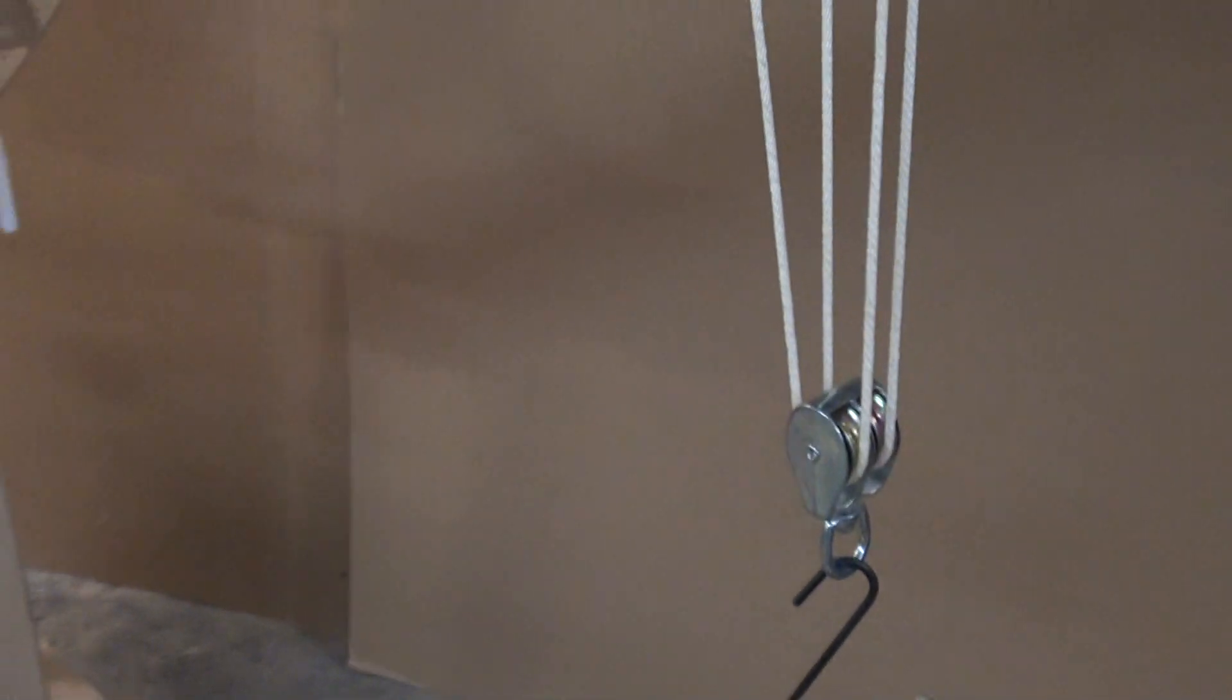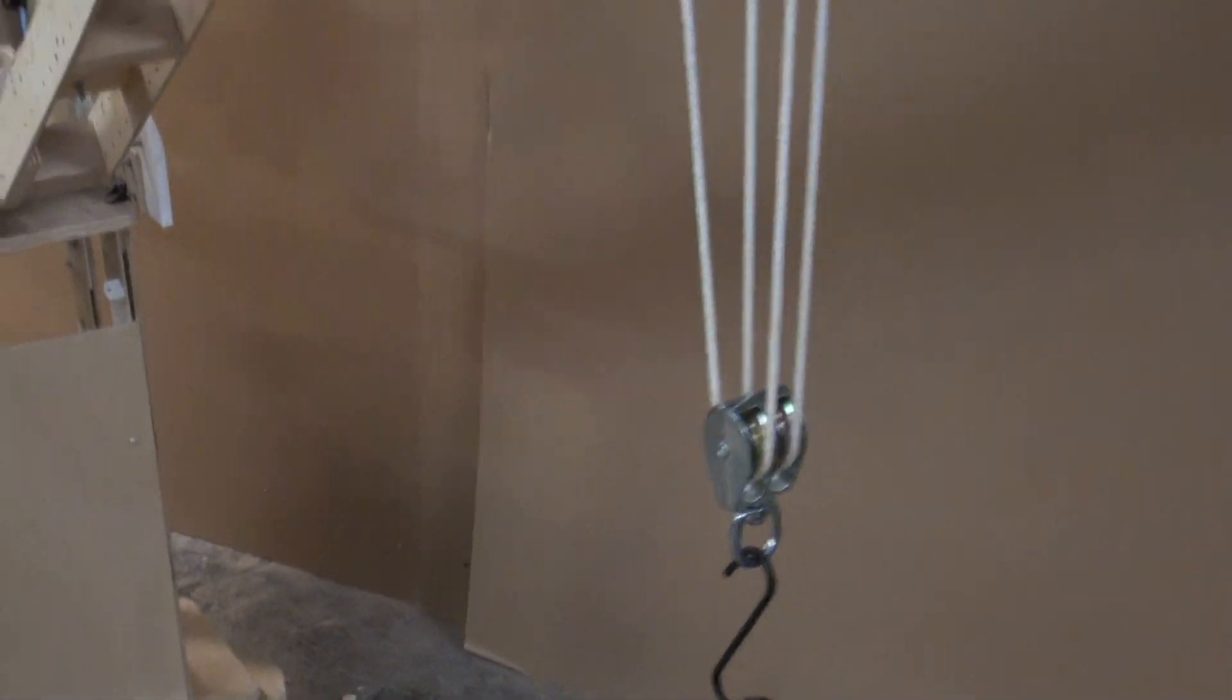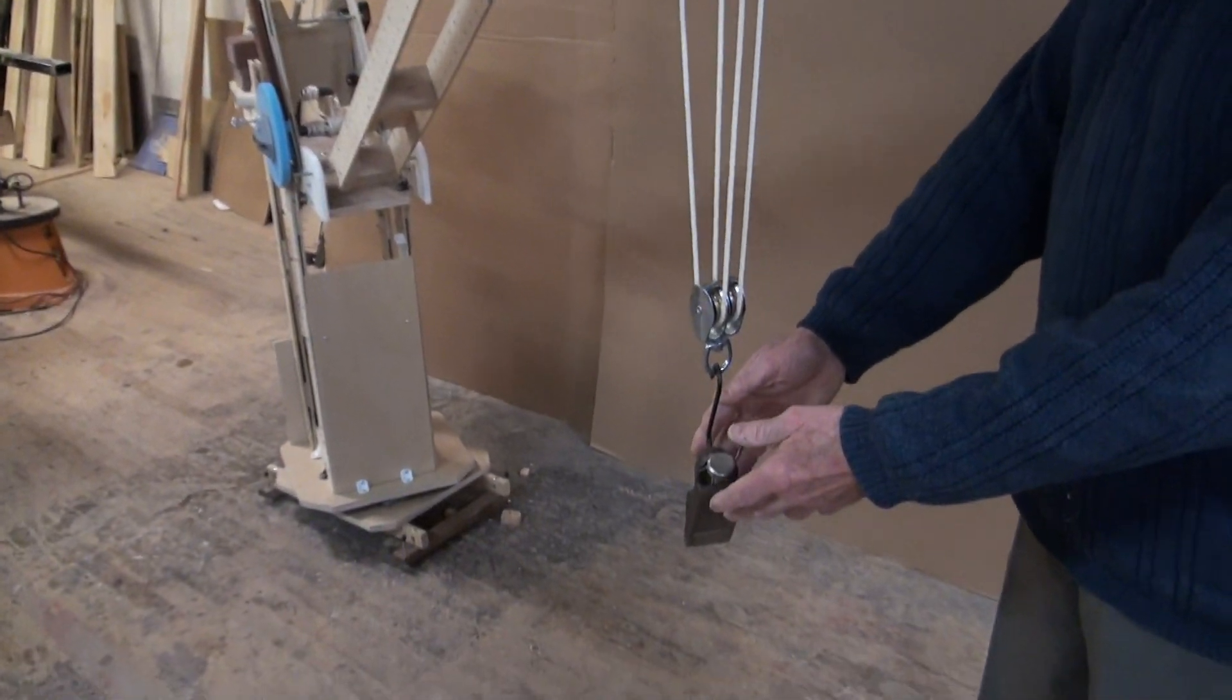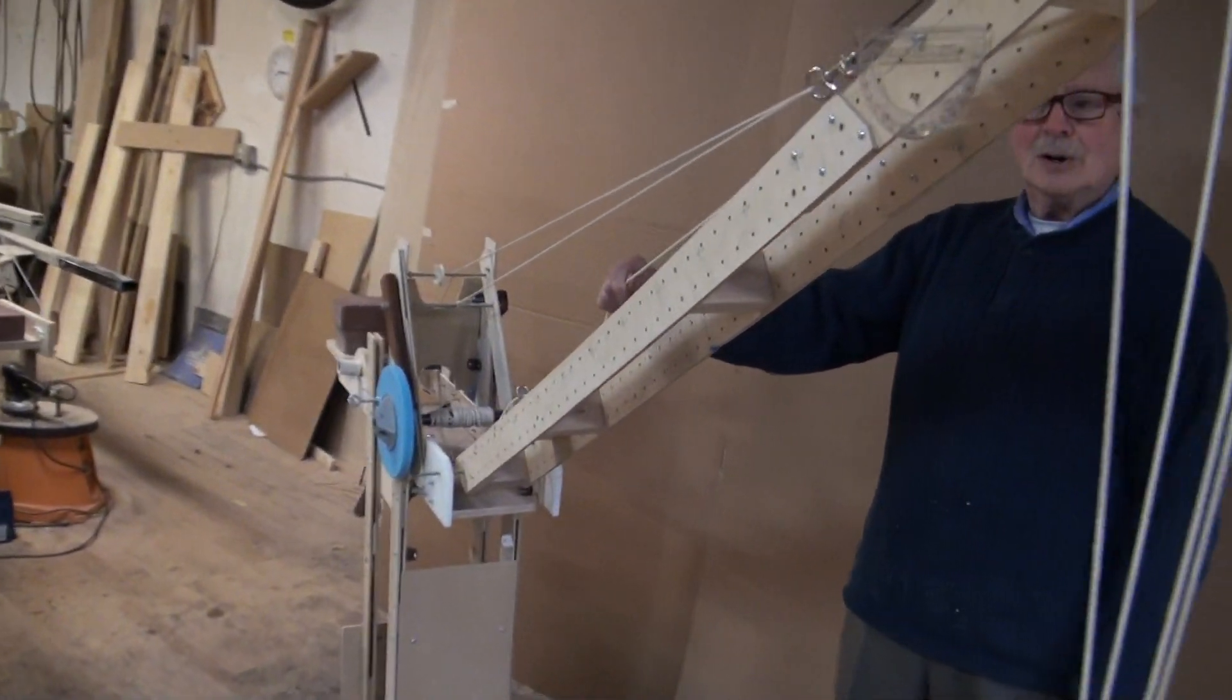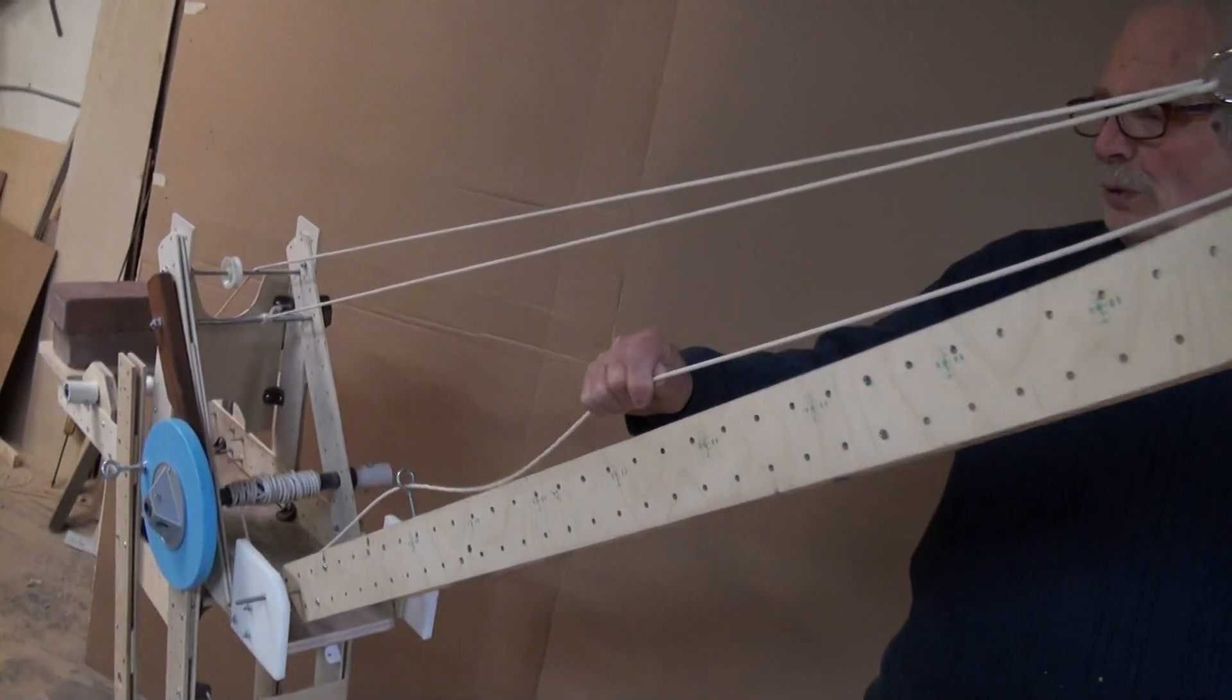Four parts of line gives you a mechanical advantage of four. Let's say this was a hundred pound load and you're lifting it on this line here, over here before it goes around the windlass.